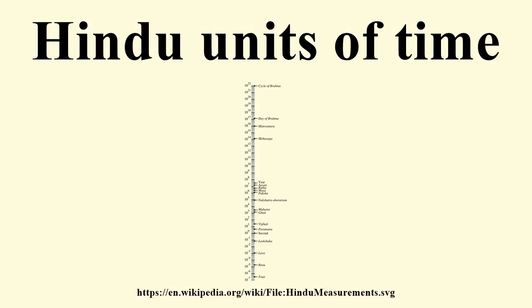Each cycle starts with the birth and expansion of the universe equaling 311.04 trillion years, followed by its complete annihilation. The current universe was created in Padma Kalpa, the last day Kalpa of the 50th year of Brahma — 10.51 billion years ago. This figure is close to the modern estimated age of the universe of 13.79 billion years.